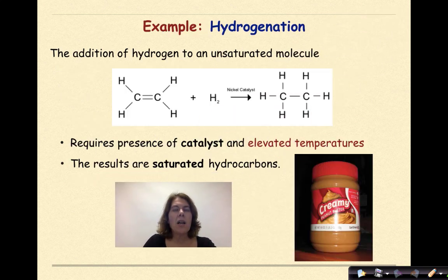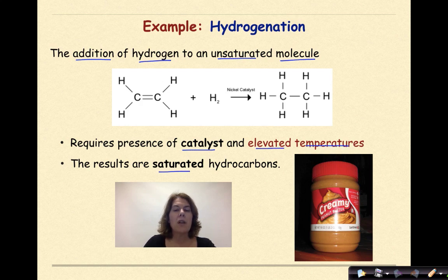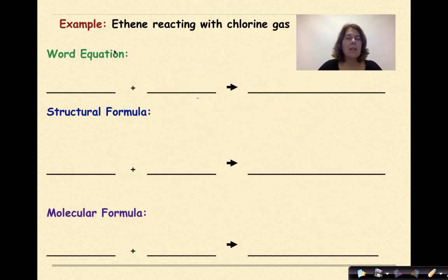So here's an example, hydrogenation, the addition of hydrogen to an unsaturated molecule. This requires the presence of a catalyst and elevated temperatures. The results are saturated hydrocarbons. Let's look at an example.